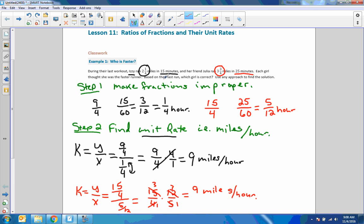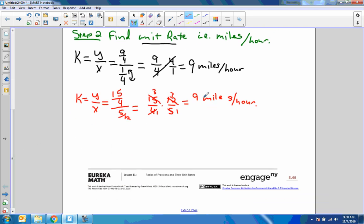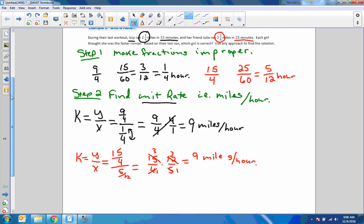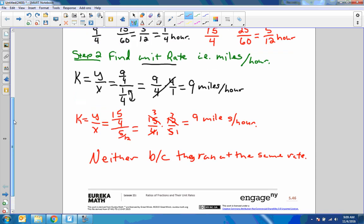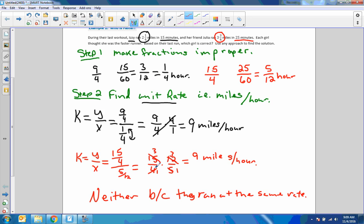So go back and read the question. Based on their last run, which girl is correct? And it said each girl thought she was a faster runner. So which runner, which one's correct? Well, if Izzy said she was faster, 9 is not more than 9. And if Julia said she ran faster, her 9 is not more than 9. So neither are correct because they run at the same rate. If you're running at the same rate, one is not faster than the other.